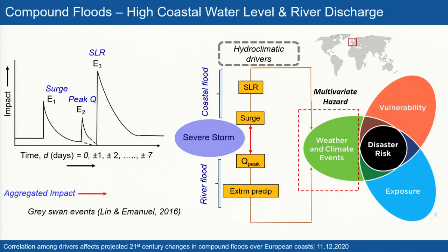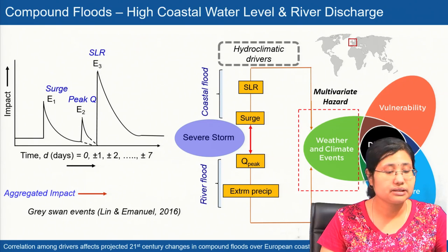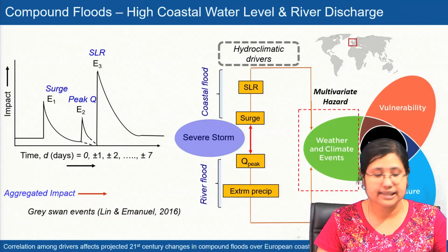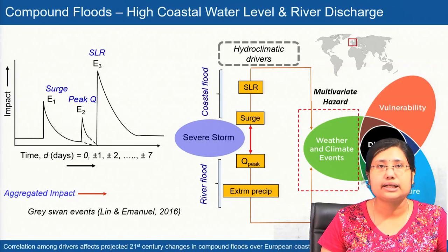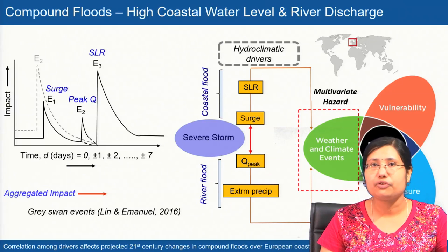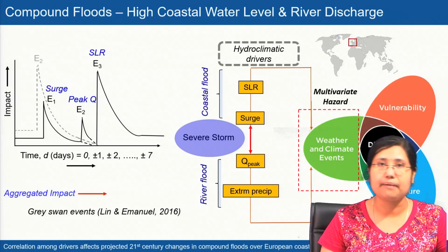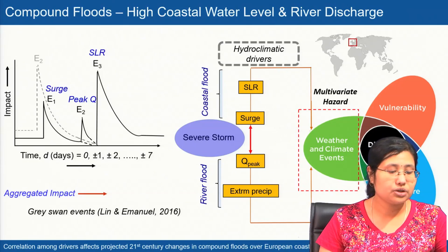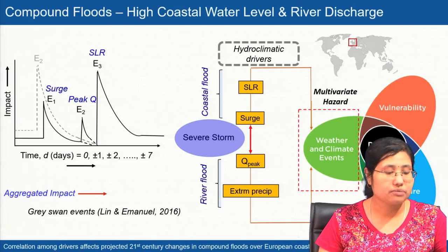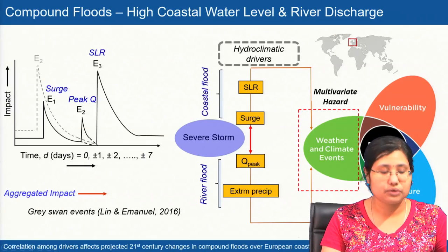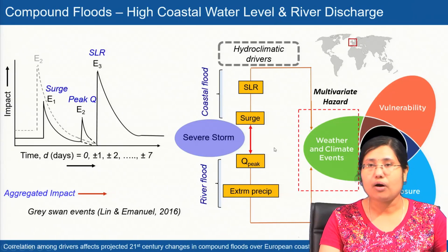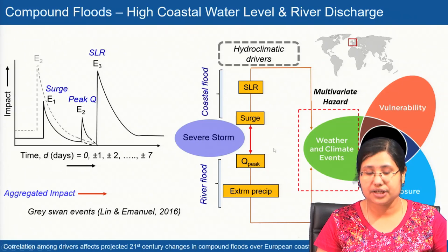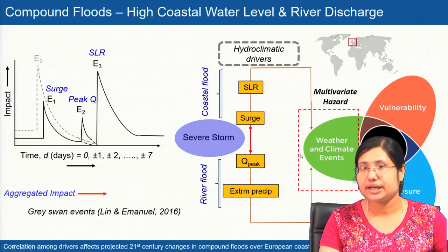What is meant by compound flood? Compound flood is the simultaneous or lag-day occurrence of river flood as well as coastal storm surge, which can happen on the same day or at a time interval of a few hours or a few days — up to a week. When both mechanisms, storm surge and river floods, interact together within a short span of time, they create an extreme impact that an individual driver may not be able to create. When all these associated factors interplay together, it creates a multivariate hazard.